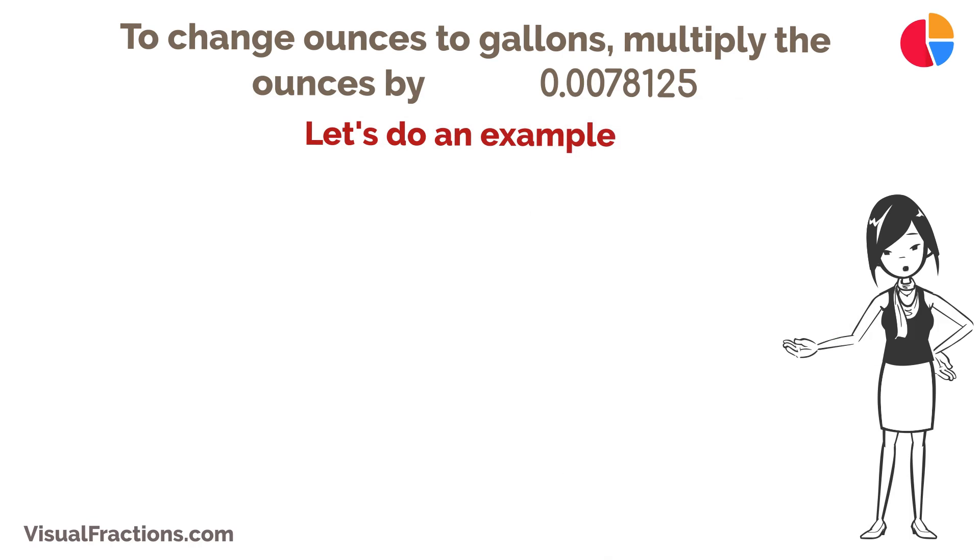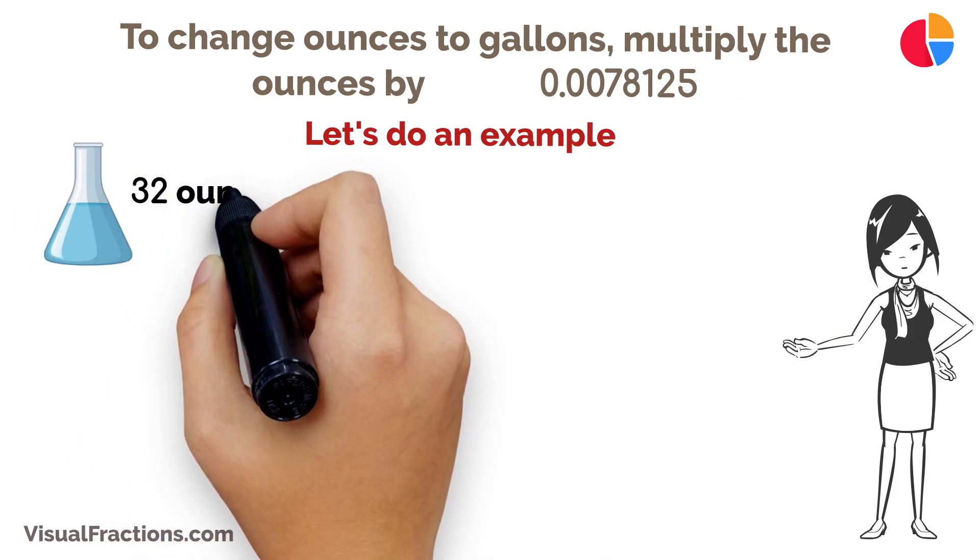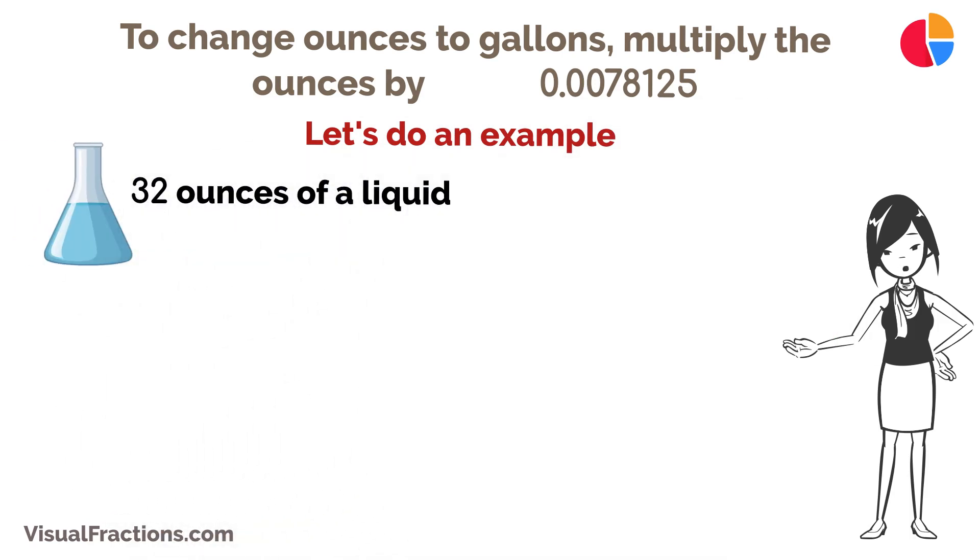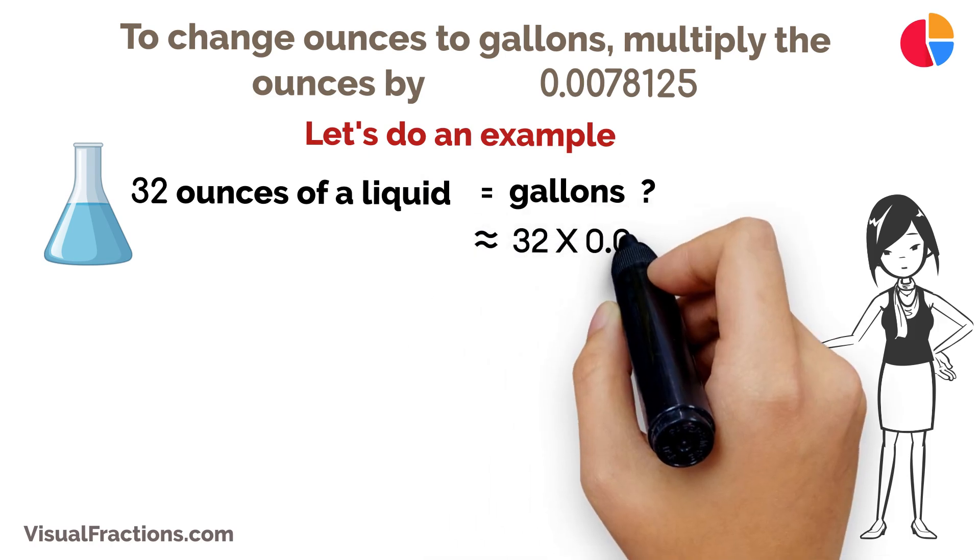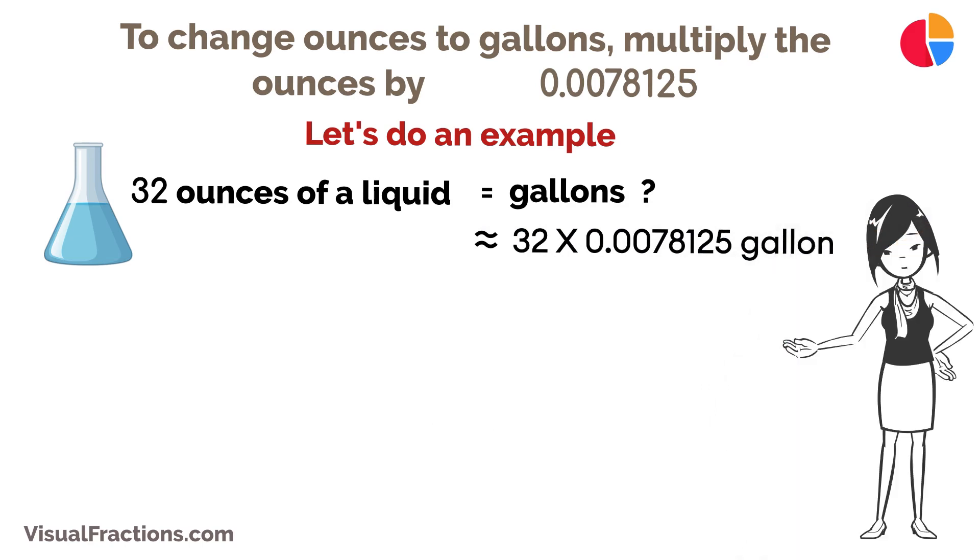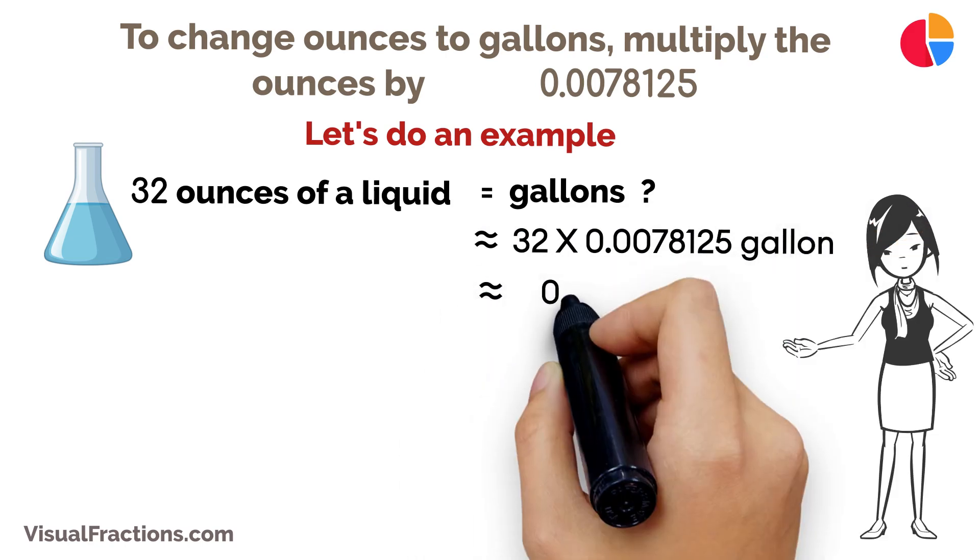Let's do an example. If you have 32 ounces of a liquid and you want to know how many gallons that is, you multiply 32 ounces by 0.0078125. This gives you about 0.25 gallons.